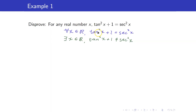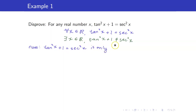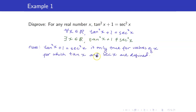This is one of the Pythagorean identities. However, take note that this is only true for values of x for which tangent of x and secant of x are defined. This equation will not be true for values of x for which tangent of x and secant of x are not defined.